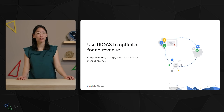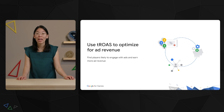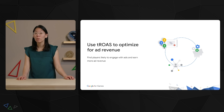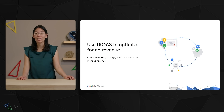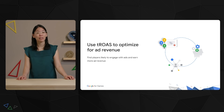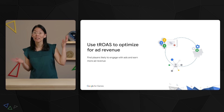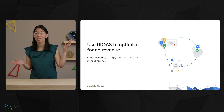We announced Target Return on Ad Spend for Ad Revenue, or TROAS for Ad Revenue, which is a way for you to find users who are more likely to engage with in-app ads. When you bid to Target ROAS with a focus on ad revenue, you can directly optimize to revenue earned from ads shown in your app, and dynamically pay more or less depending on how likely a player is to engage with your in-app ads.